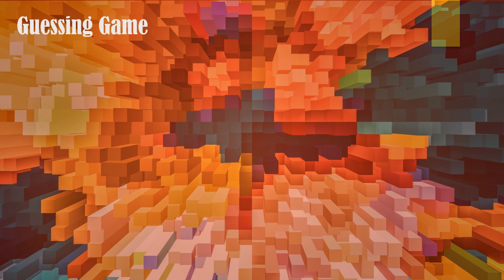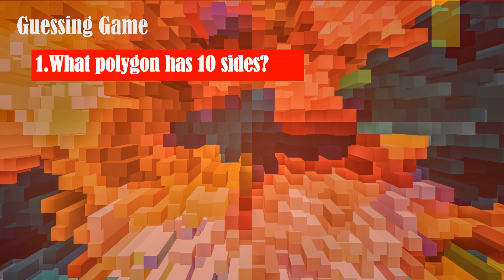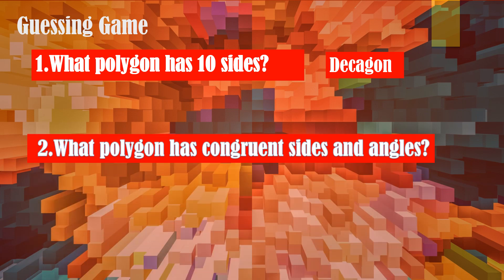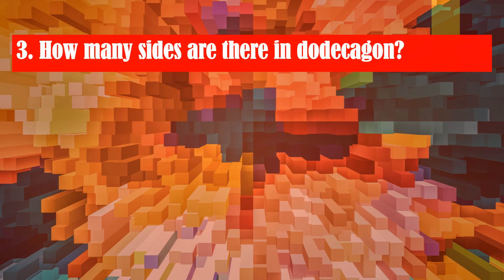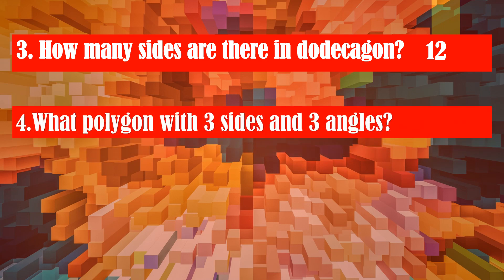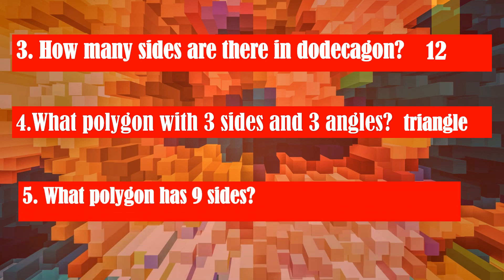Let's go on the guessing game. What polygon has ten sides? Decagon. Correct, very good. How about a polygon that has congruent sides and angles? It is the regular polygons. Correct. How many sides are there in the decagon? Very good. How about a polygon with three sides and three angles? Triangle. Very good. How about a polygon that has nine sides? Nonagon. Correct.